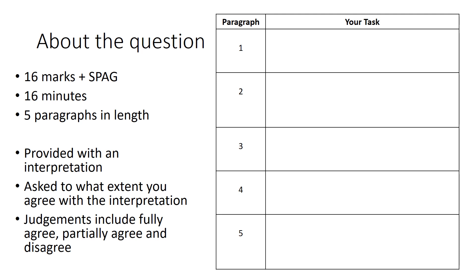We'll be provided with an interpretation — usually this is by a historian, but it doesn't necessarily need to be — and we'll be asked to what extent we agree with the interpretation. We'll need to make a judgment: we can either fully agree, partially agree, or disagree with the interpretation, and we'll have to provide some evidence as to why we've made this judgment.